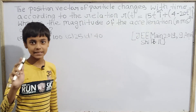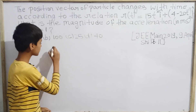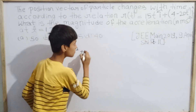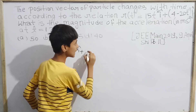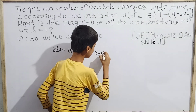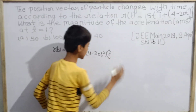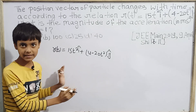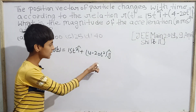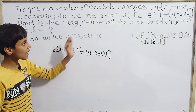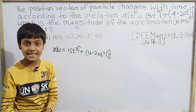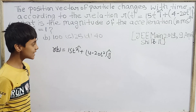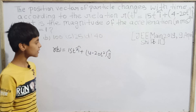So first of all, the relation given is r(t) = 15t² î + (4 − 20t²) ĵ. This is the position vector as a function of time. We have to find the acceleration of the particle in SI units — that is, in meters per second squared — at t = 1.